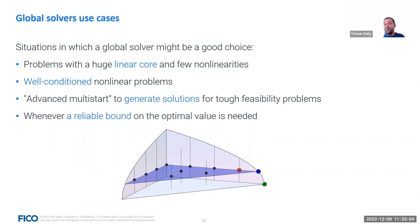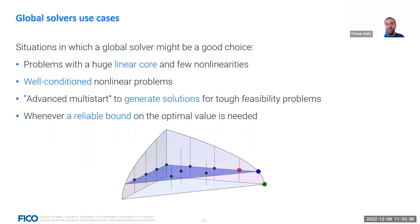Something similar to multi-start can happen with a global solver — we run our local solvers (SLP or Nitro) at different points of the search to generate feasible solutions. This can be seen as an advanced multi-start: unlike existing multi-start methodology, this is not random. Instead you start from points corresponding to optimal solutions of your LP relaxations or formed by MIP solutions, which have a higher likelihood of generating good MINLP solutions. And of course, whenever you need a reliable bound on the actual optimal value, there is simply no other way to obtain it than using a global solver.